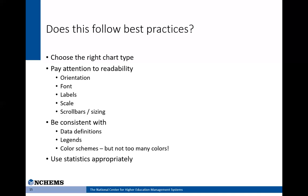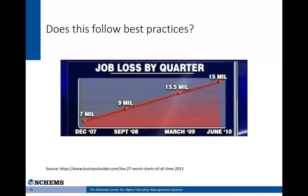I'm sure we've all seen examples of how bad or even unethical use of statistics can lead to misinterpretation and misinformation. Now I'll show you a few examples of visualizations that are not following these best practices. First we have what looks like a line chart showing an upward trend in jobs lost every quarter, but looking more closely you can see this isn't actually job loss by quarter but instead a cumulative number of jobs lost. So it's not that we lost 15 million jobs in June 2010 — it's that as of 2010 we've lost 15 million jobs cumulatively.